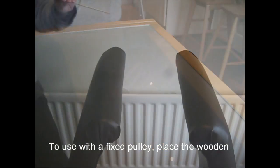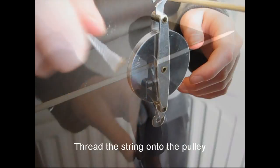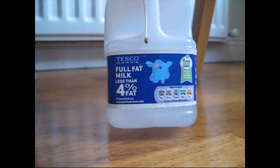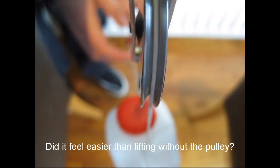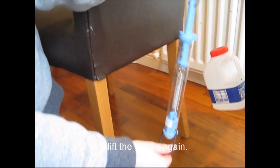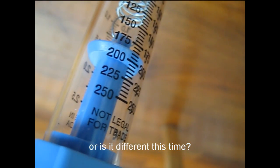To use with a fixed pulley, place the wooden skewer between the desks or chairs and hang a pulley off it. Thread the string onto the pulley and lift up the carton. Did it feel easier than lifting without the pulley? Now attach the force meter to the string and lift the carton again. Is the reading much the same as before or is it different this time?